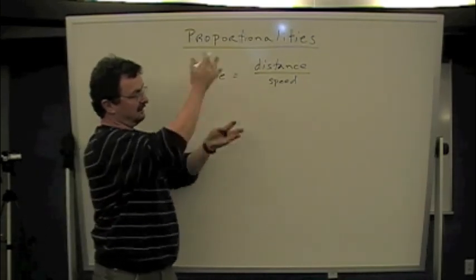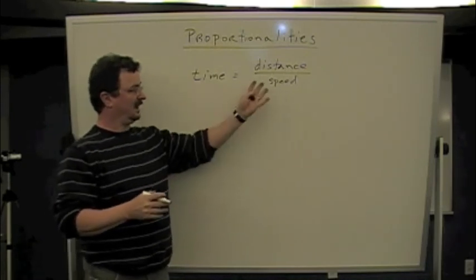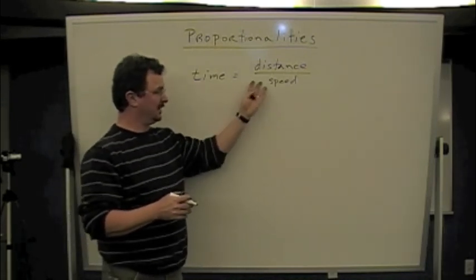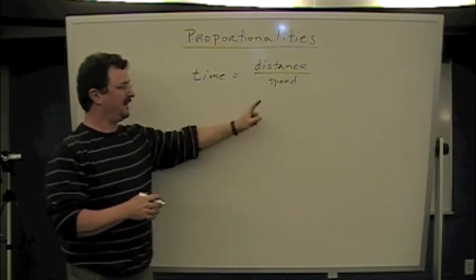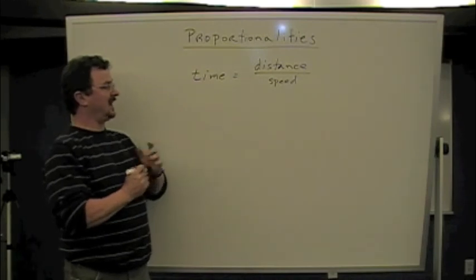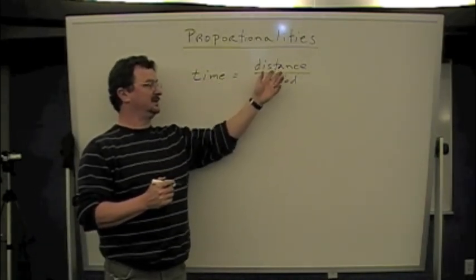So if I plug in distance and speed, I can figure out time. Or if I know time and distance, I can change it around so I can figure out speed. But what if I know how these three quantities relate to each other, but I only change one of these things? The time of travel to somewhere depends on two things. It depends on distance and speed.